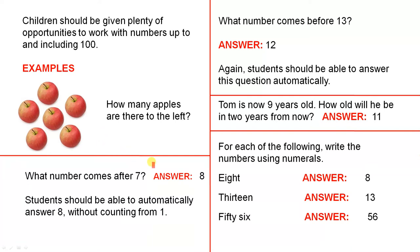What number comes after 7? It's obvious that the answer is 8. But the important point here is that students should be able to automatically answer 8 without counting from 1. So as soon as they see the number 7, they know that 8 is the next number.